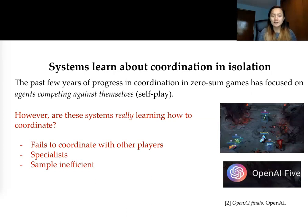But we really need to ask ourselves whether these systems are really learning how to coordinate. There are generally three different types of failure modes that we see. One is that these agents fail to coordinate with other players other than themselves. Two is that these agents are specialists.